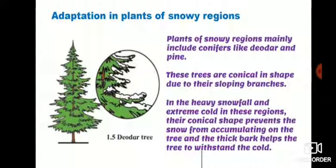Adaptations in plants of snowy regions. Plants of snowy regions mainly include conifers like deodar and pine. These trees are conical in shape due to their sloping branches. You can see in the picture. In the heavy snowfall and extreme cold of this region, their conical shape prevents snow from accumulating on the tree, and the thick bark helps the tree to withstand the cold.